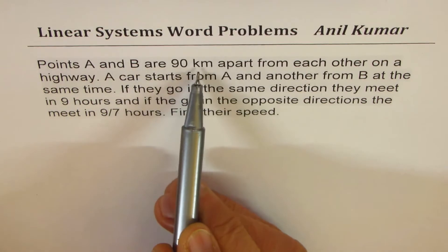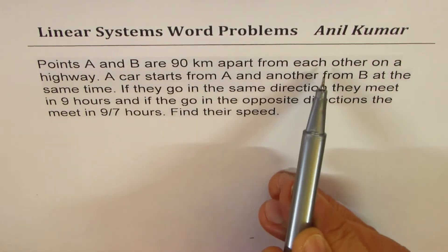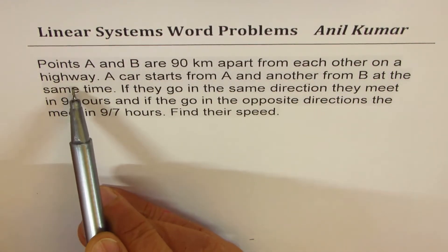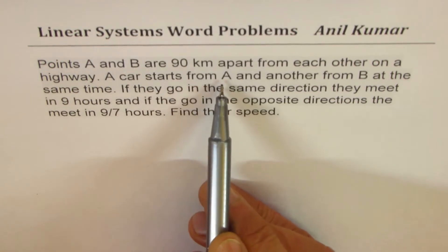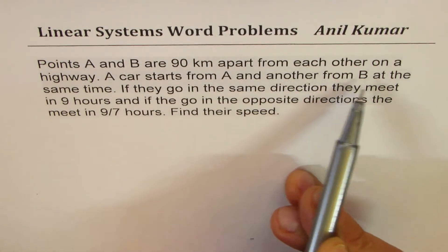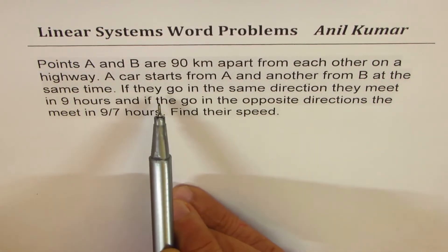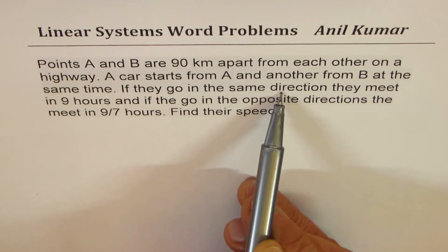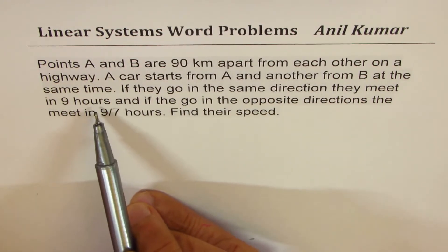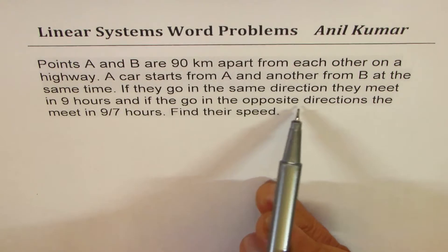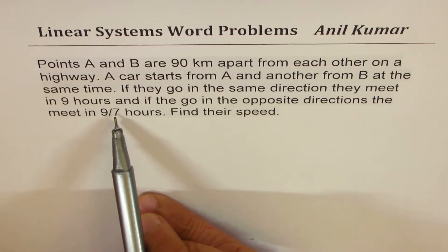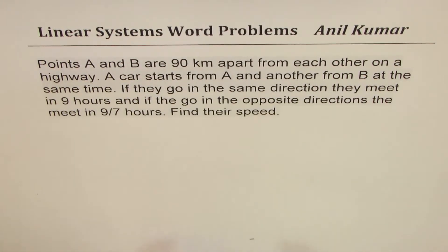Points A and B are 90 km apart from each other on a highway. A car starts from A and another from B at the same time. If they go in the same direction, they meet in 9 hours, and if they go in opposite directions, they meet in 9 over 7 hours. Find their speed.